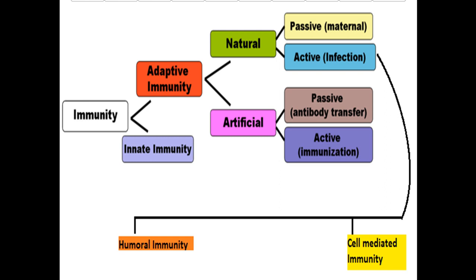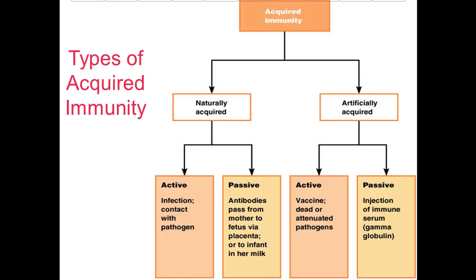Acquired immunity is divided into naturally acquired and artificially acquired. Naturally acquired immunity is divided into active and passive. In active naturally acquired immunity, there is infection or contact with the pathogen. In passive immunity, antibodies pass from mother to fetus via the placenta, or to infants in her milk. In active immunity there is a challenge to the body, while in passive immunity the preformed antibodies are available for the fetus.